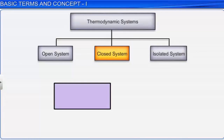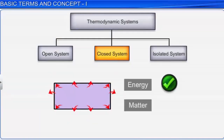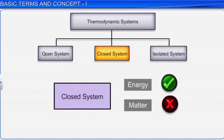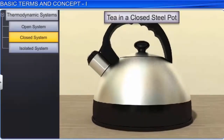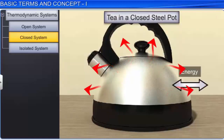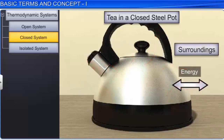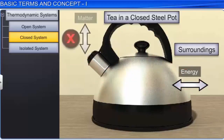A system which permits the exchange of energy but not the exchange of matter across the boundary with its surroundings is called a closed system. For example, if tea is kept in a closed steel teapot, it takes some time to cool down, indicating that energy is exchanged with the surroundings. However, as vapor cannot escape from the container, no exchange of matter is possible. Hence, this is an example of a closed thermodynamic system.